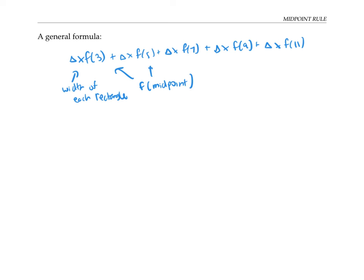In our example, we represented the area of our five rectangles with this expression. Delta x, which had a value of 2, represented the width of each rectangle, and these other values, f of those values, was f of a midpoint of a rectangle, or a subinterval that was the base of the rectangle.